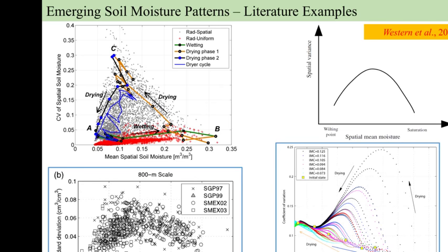Regarding wilting point: wilting point is when the plant wilts and dies — this is the soil moisture state at which the plant cannot recover. The pressure — water pressure — drops and the plant cannot take up water. If soil moisture goes even drier, that is called the hygroscopic point. This is a Great Plains example. In our model, this is a 100-year snapshot of soil moisture. We plot two circles: a drying phase and a green phase.